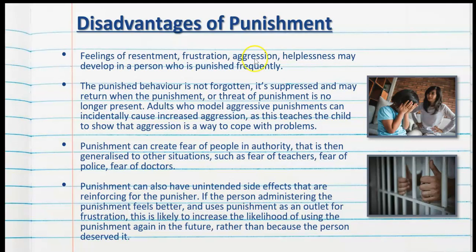The punished behaviour is not forgotten. It may be suppressed and may return when the punishment or threat of punishment is no longer present. Adults who model aggressive punishments can incidentally cause increased aggression, as this teaches the child that aggression is a way to cope with problems.